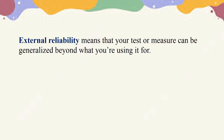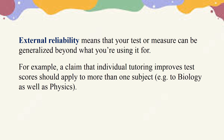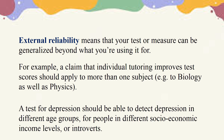External reliability means that your test or measure can be generalized beyond what you're using it for. For example, a claim that individual tutoring improves test scores should apply to more than one subject, e.g. to biology as well as physics. A test for depression should be able to detect depression in different age groups, for people in different socioeconomic income levels, or introverts.